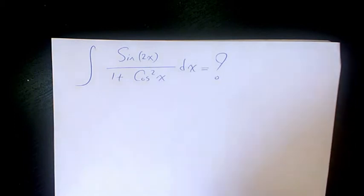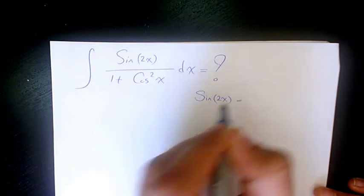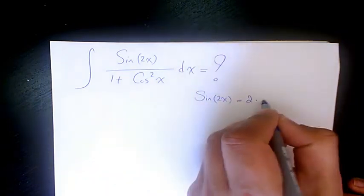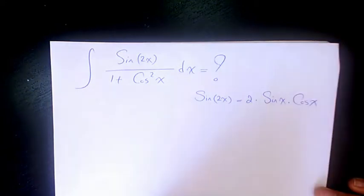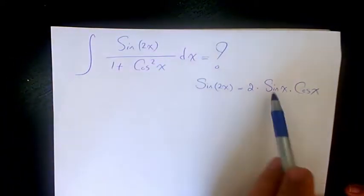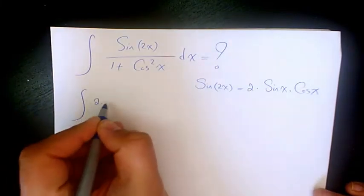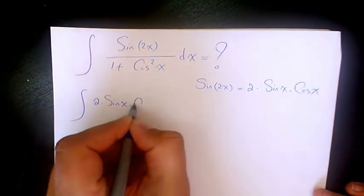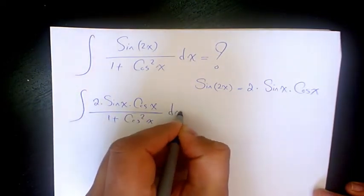So what I can do first, we know from trigonometric identities or from double angle formula, sine 2x equals 2 times sine x times cosine x. Then, I'm going to sub this expression here, replace it, so it's going to be 2 times sine x times cosine x over 1 plus cosine squared x dx.